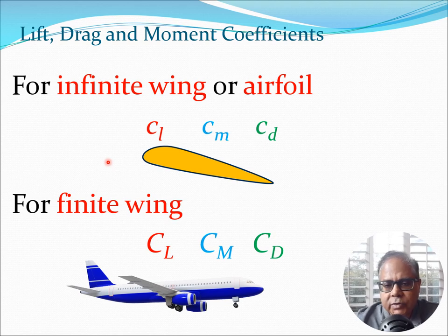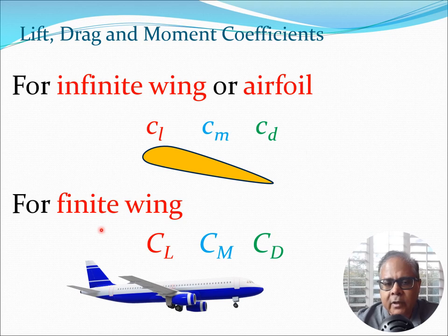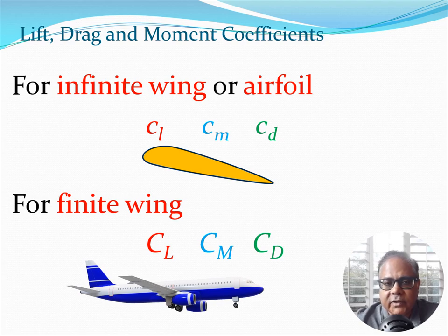We are going to use a different notation for infinite wings and finite wings in terms of the lift, drag, and pitching moment coefficients. For the airfoil section we will use lowercase letters — small c_l, small c_m, small c_d — as the lift, moment, and drag coefficients for an airfoil or infinite wing. For a finite wing we will use capital C_L, C_M, C_D. This helps us demarcate the difference between these two types of wing situations.